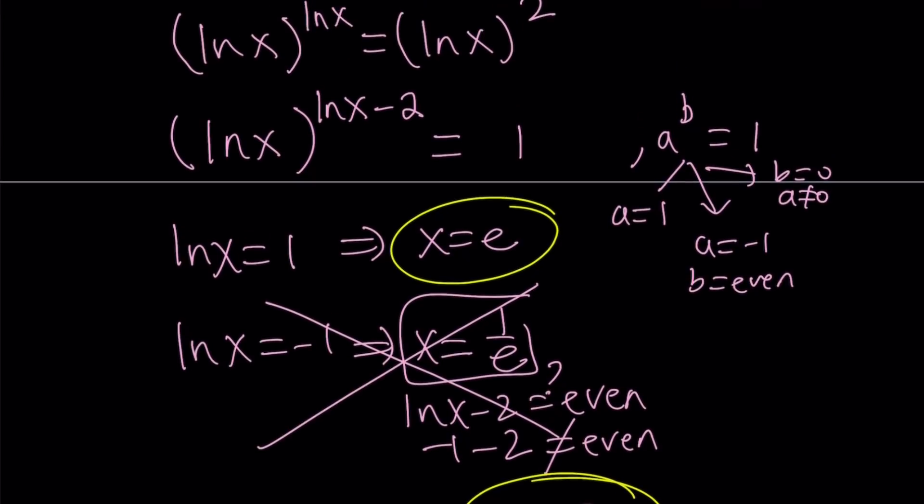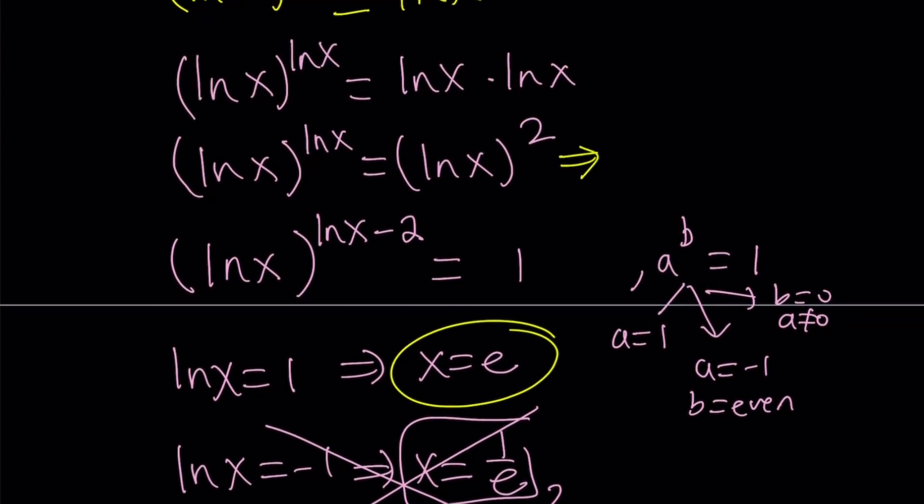Now, what is the second way to go about it? Fairly easy. If you look at this equality, the bases are the same. Therefore, the exponents are going to be the same. ln x equals two. This gives you x equals e squared. Or you can say, hey, the base can be one as well, because one, any power of one is one. So you can also say that, hey, ln x equals one is going to work. This means x equals e.